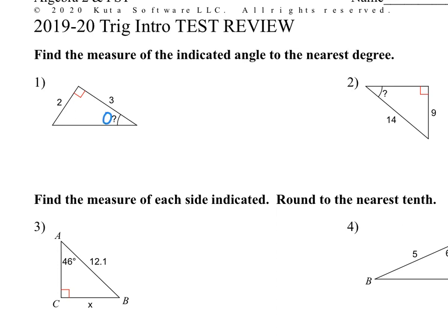So in this problem, the angle we want to find is that one — theta is usually a variable used to represent angles. If we want to label these sides, the one across from the right angle, so this bottom side, is going to be the hypotenuse. The 2, going all the way to the other side of the triangle, is the opposite side, and the 3 is the adjacent side because it's connected to the angle but it's not the hypotenuse.